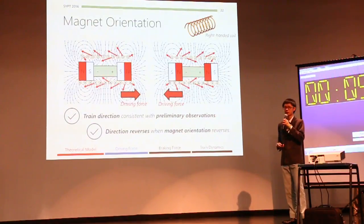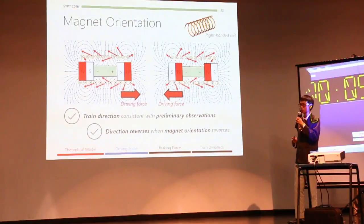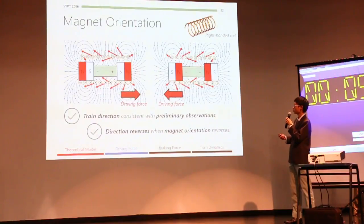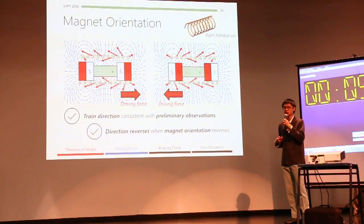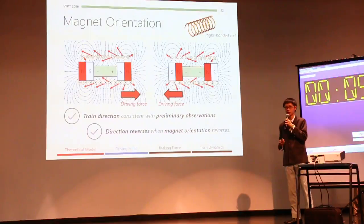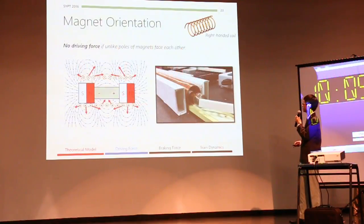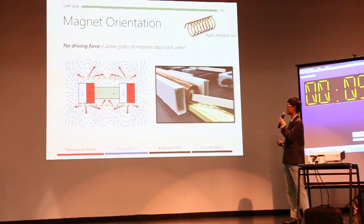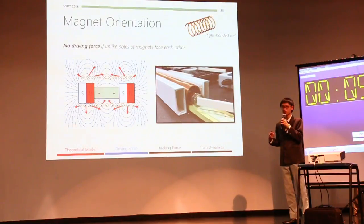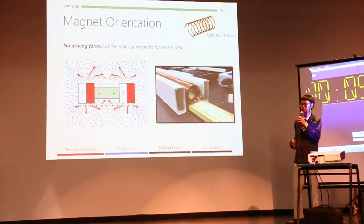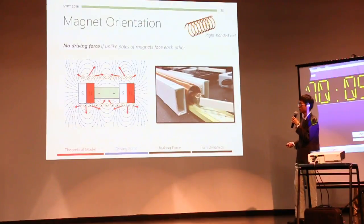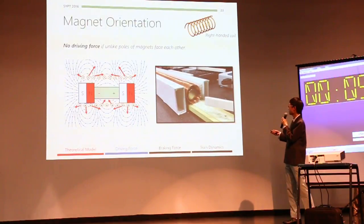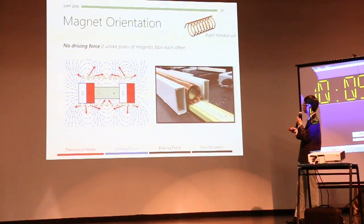Now, this mechanism also implies that if we were to flip the chirality of the coil, or to flip the magnet orientation, the driving force would be reversed in direction, and indeed, this is seen in our observations as presented earlier. And also, interestingly, if we were to place the magnets in such a way that unlike poles face each other, then we expect that there will be no net force acting on our train because the forces are symmetric and cancelled out. And indeed, in our experiments, we do see that for this configuration, there is no movement of the train.